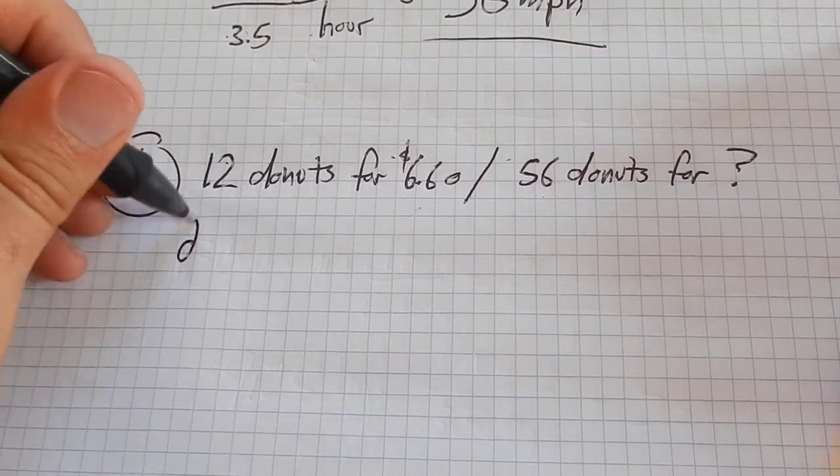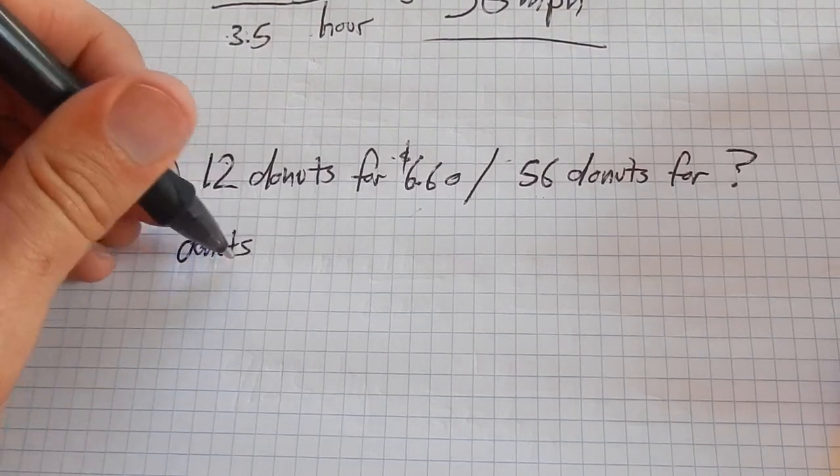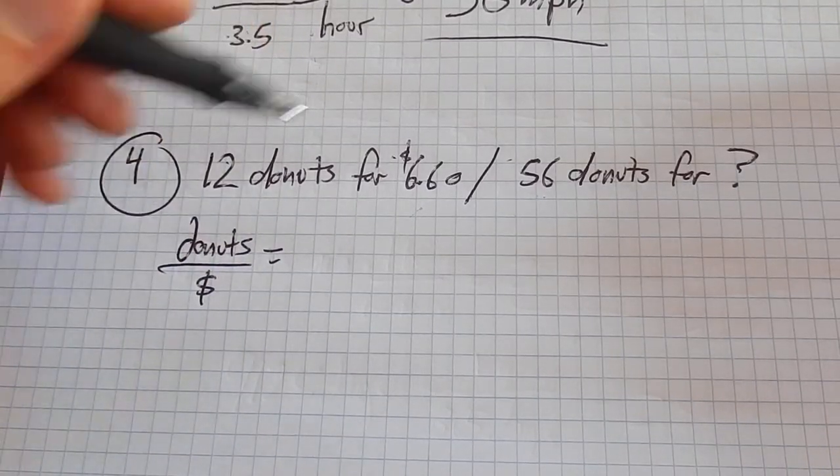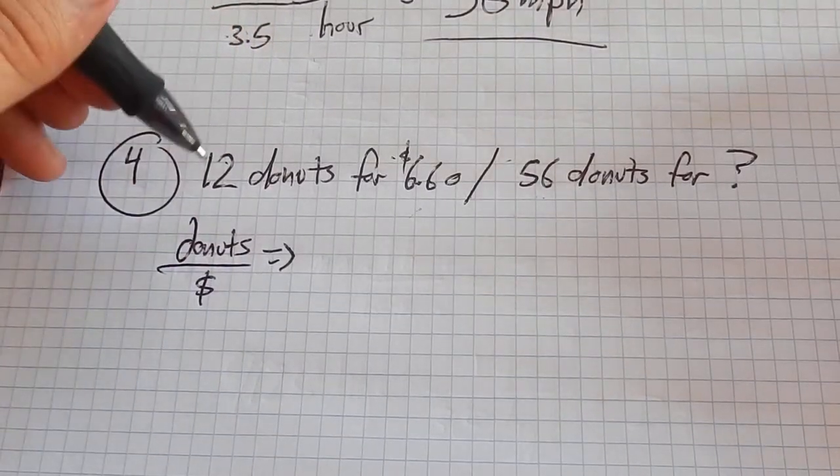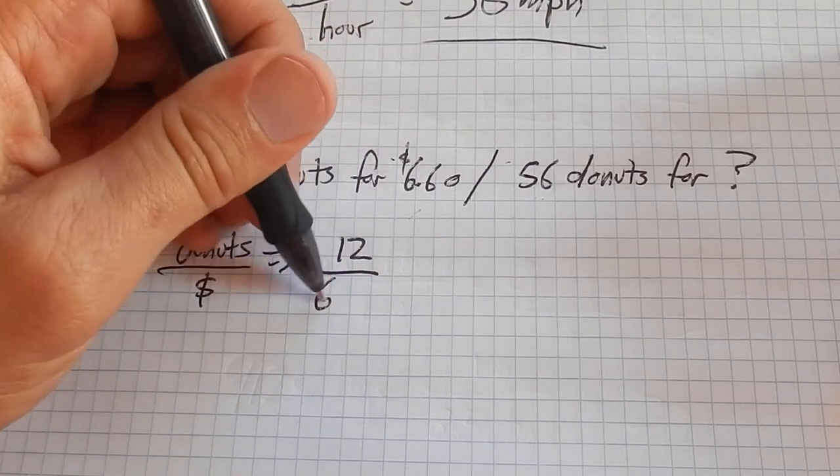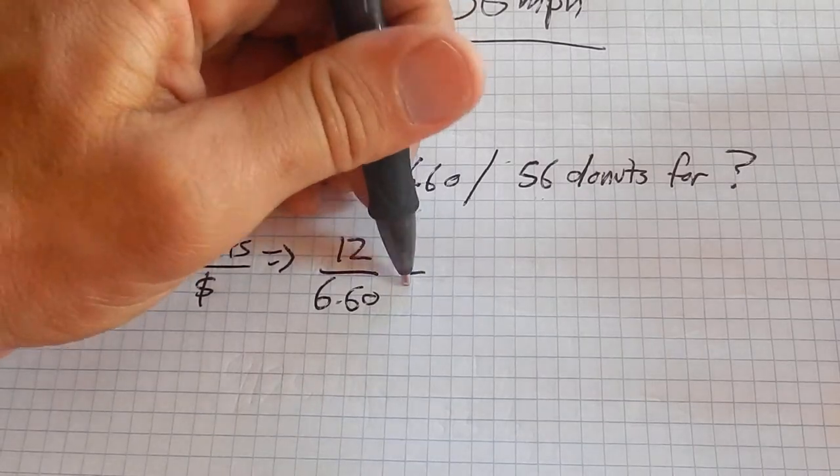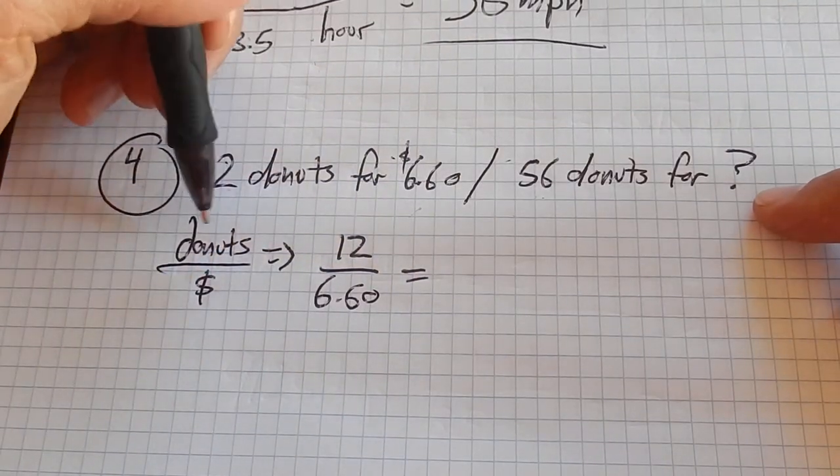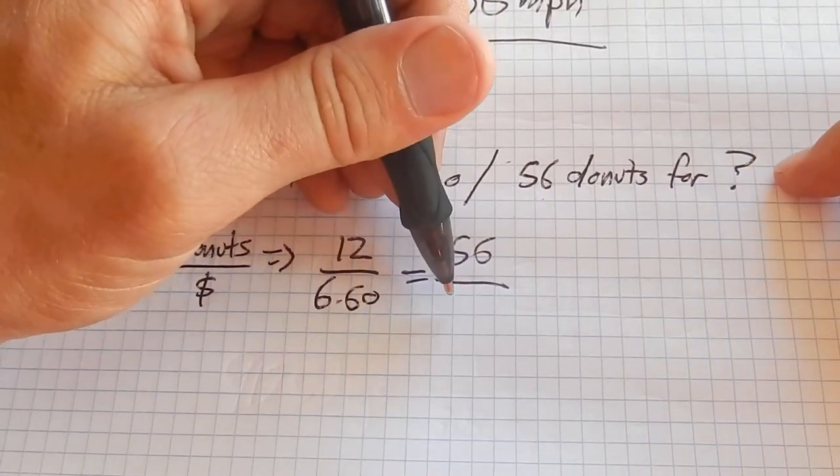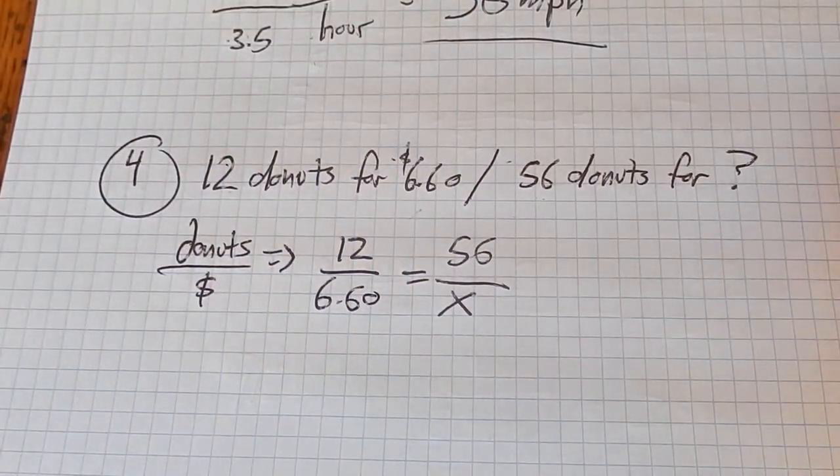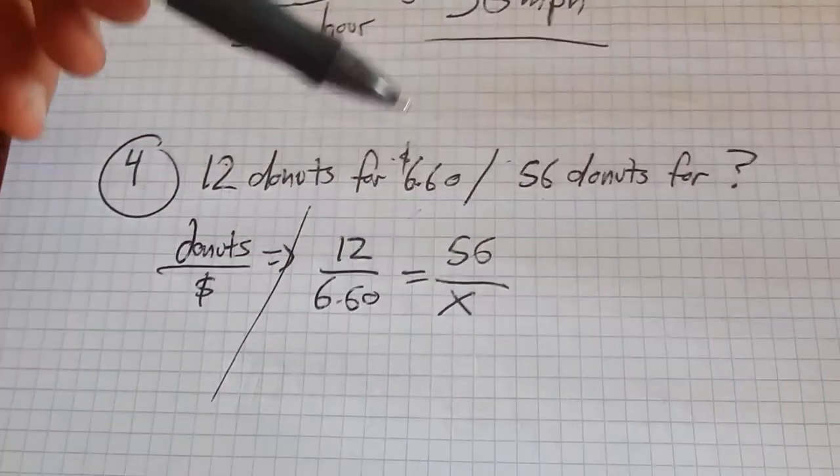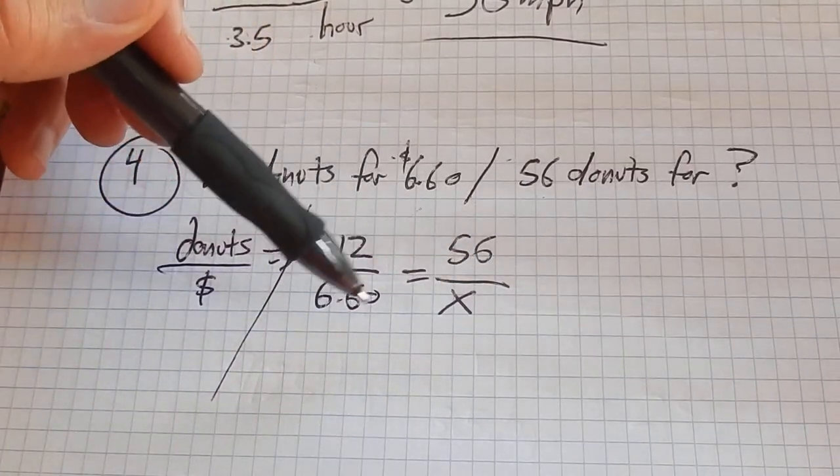I'm going to set up a proportion where I go donuts over dollars. I think of it this way so I remember what to put where. So donuts are on top, 12 donuts, and dollars, $6.60, on bottom. And then over here, again, donuts goes on top, so 56 donuts. For how much money, I'll use a variable x. And so now I have to solve this. Notice what I have is two fractions equal to each other, a proportion.